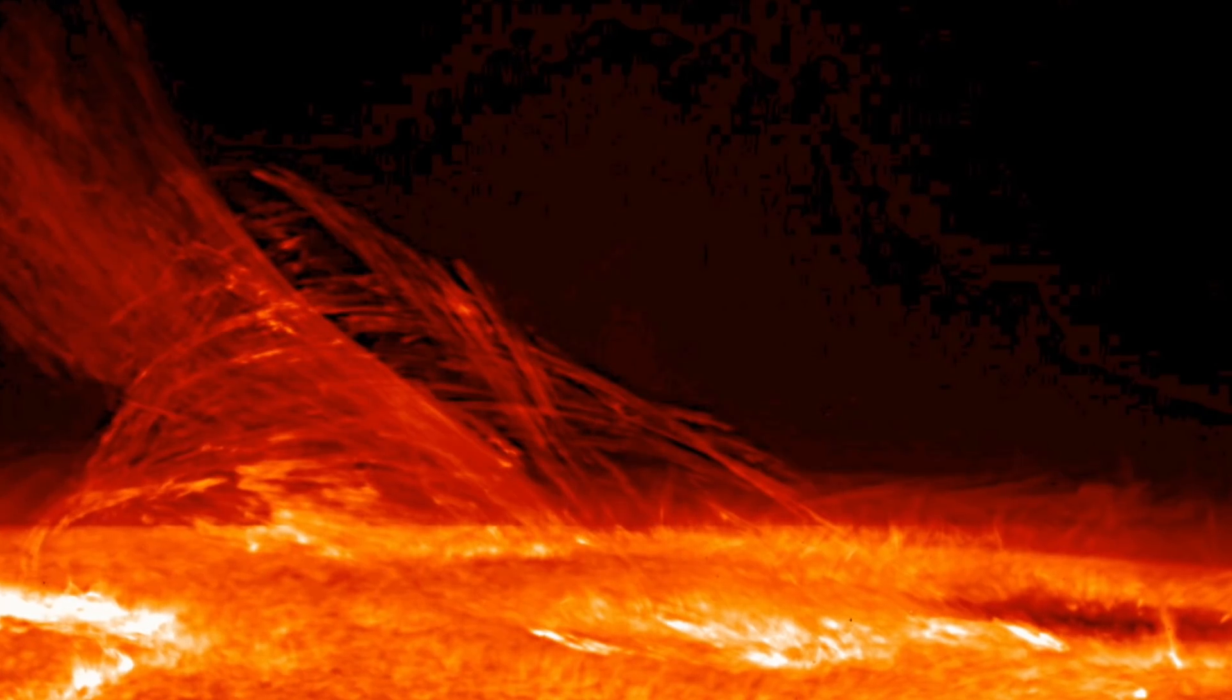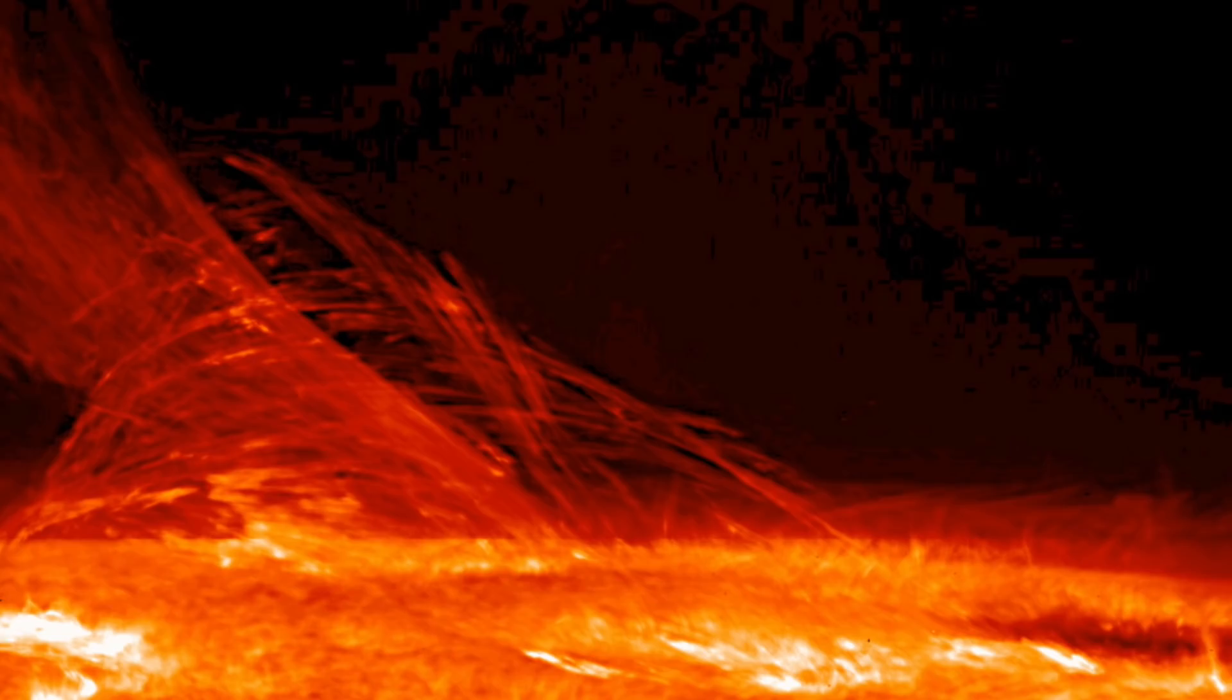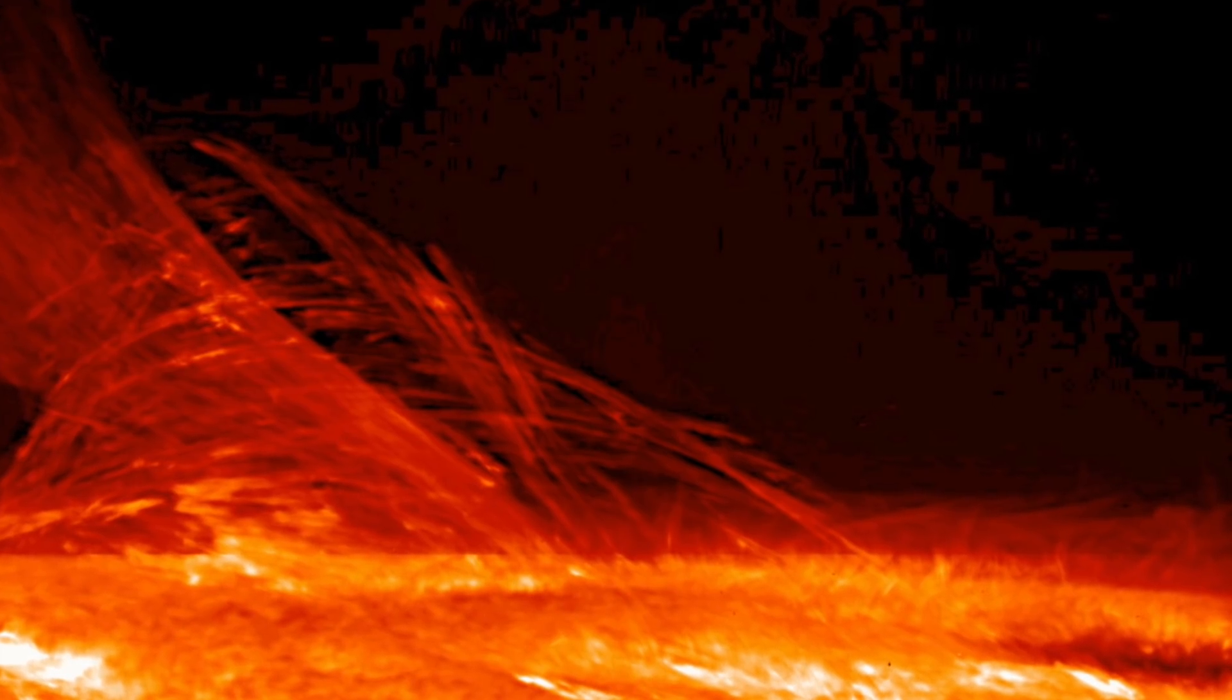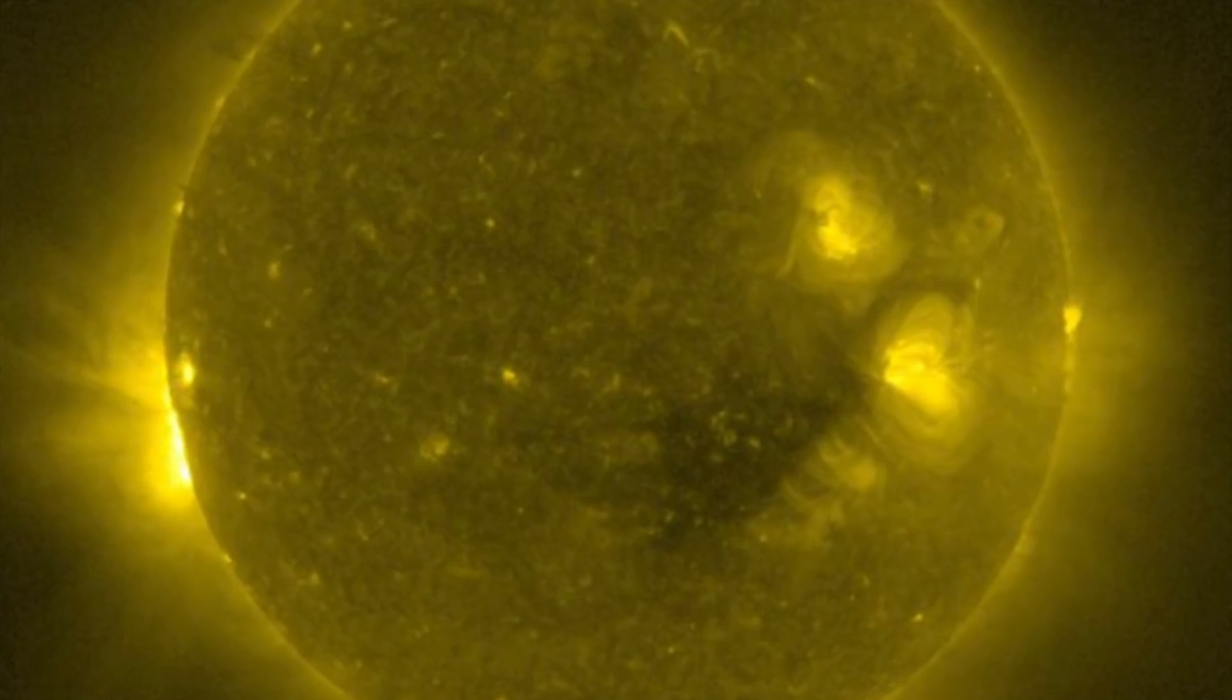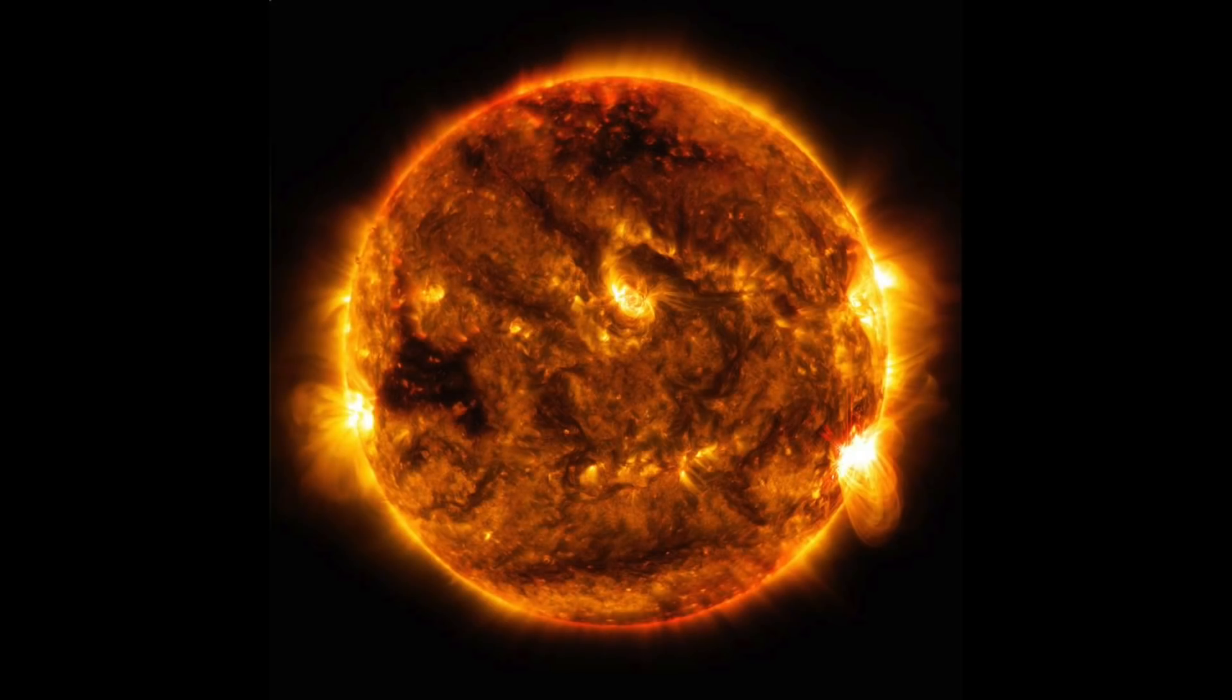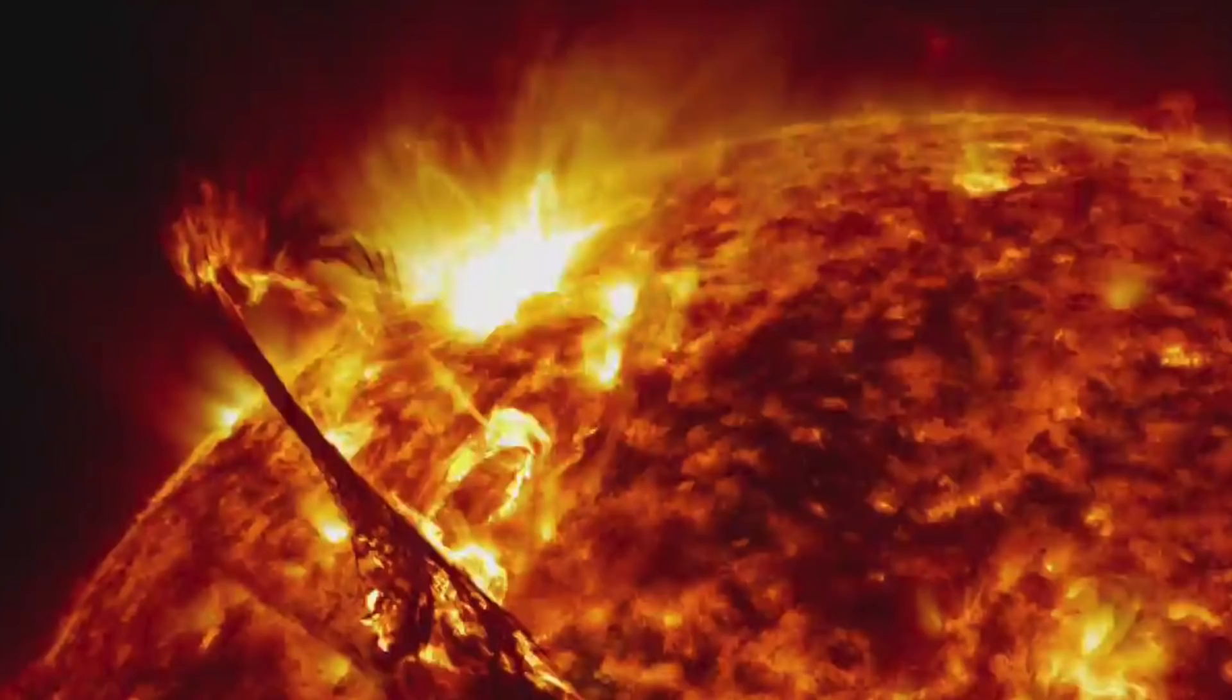In these perceptions, one of the noticeable highlights is expanded, dim districts called coronal openings. They seem dim in light of the fact that plasma particles can escape from the Sun's surface into the interplanetary space along the magnetic field, leaving openings in the crown. The appearance and area of these openings in the Sun change because of Sun-powered movement and give significant data about the drawn-out advancement of the Sun. The identification of coronal openings is a troublesome assignment for traditional calculations and is additionally trying for human spectators, on the grounds that there are likewise other dull districts in the Sun-oriented air, similar to fibres, that can be effectively mistaken for coronal openings, says Robert Yarralim, an exploration researcher at the University of Graz and the lead creator of the examination.